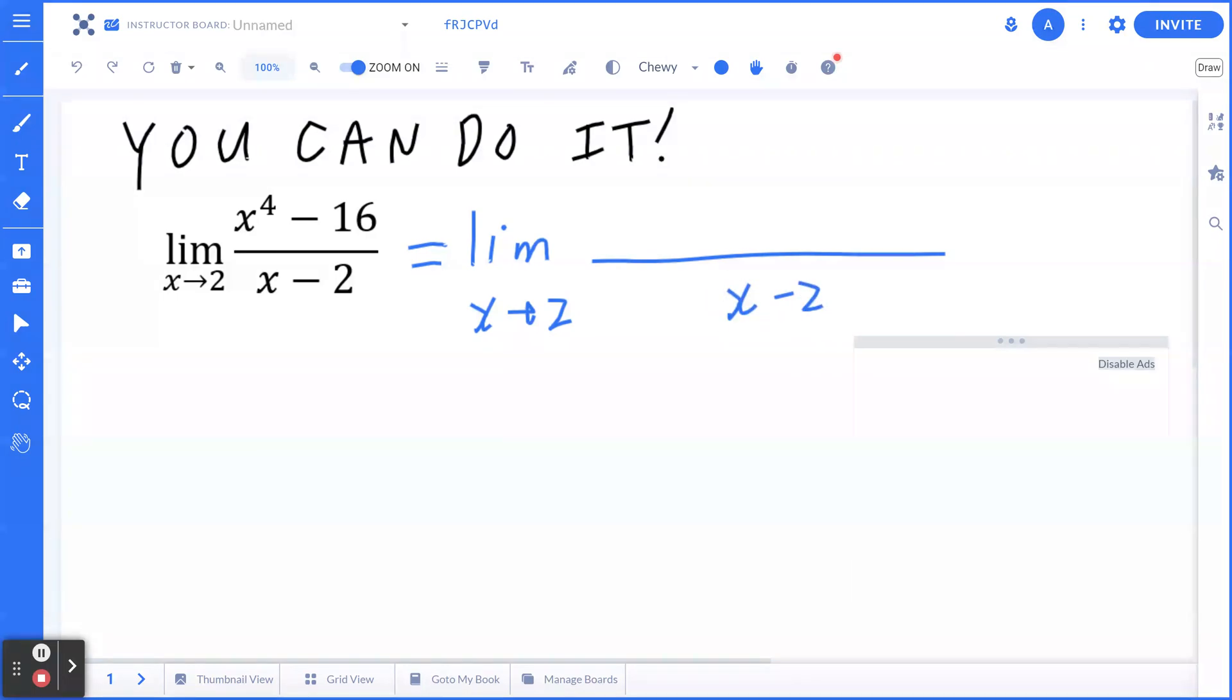So if you think about x to the power of 4 minus 16, the first step is to apply the difference of squares. So think about the fact that a squared minus b squared is going to be a minus b times a plus b. So in this case, it's going to be x squared minus 4 times x squared plus 4.